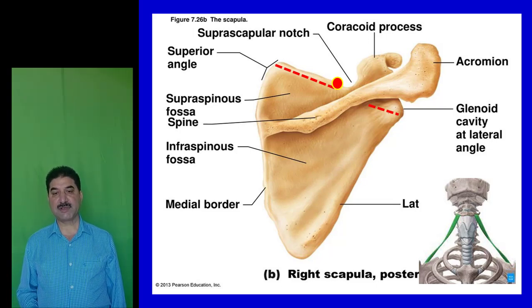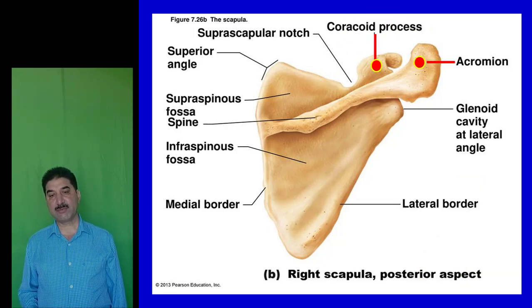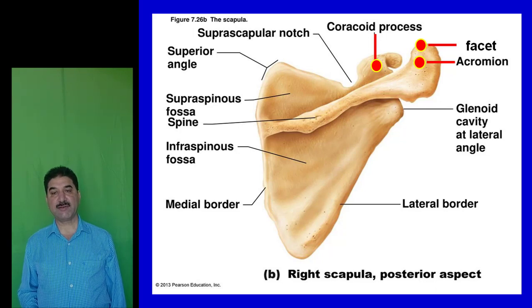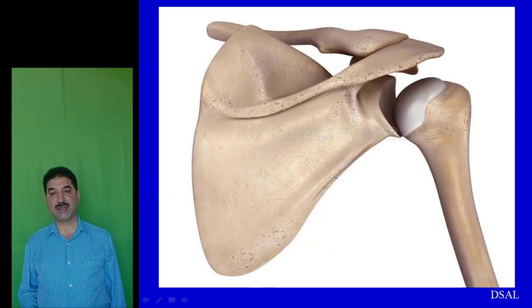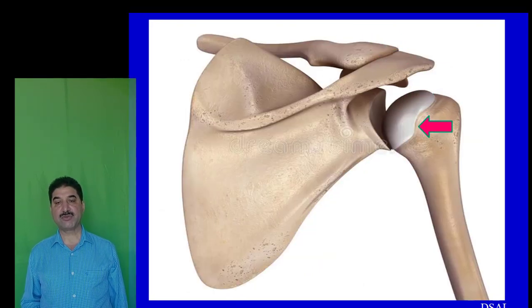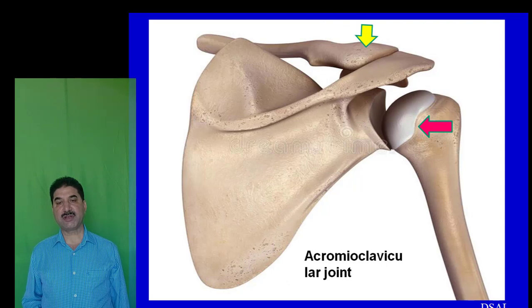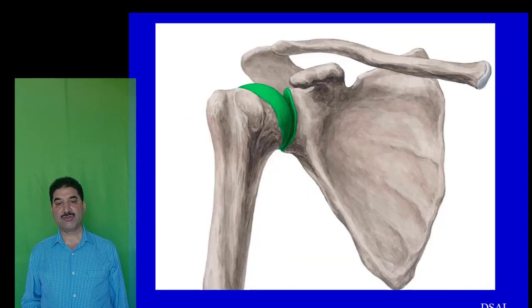On the dorsal surface of the scapula we can see the coracoid process and the acromion process. The acromion process bears an articular facet which articulates with the lateral end of the clavicle to form the acromioclavicular joint. The scapula articulates with the upper end of the humerus to form the shoulder joint, and the acromion articulates with the lateral end of the clavicle to form the acromioclavicular joint.